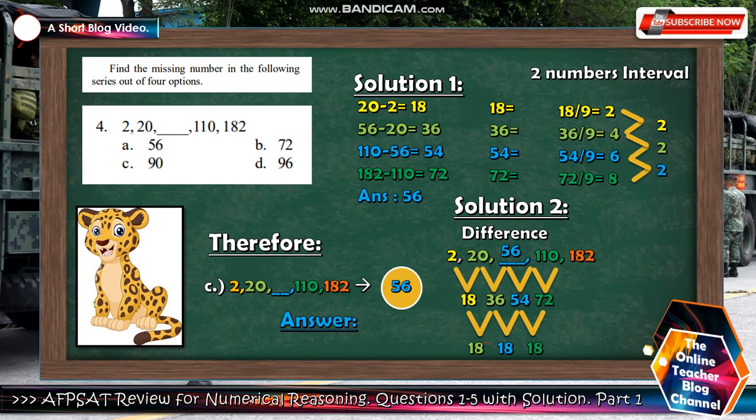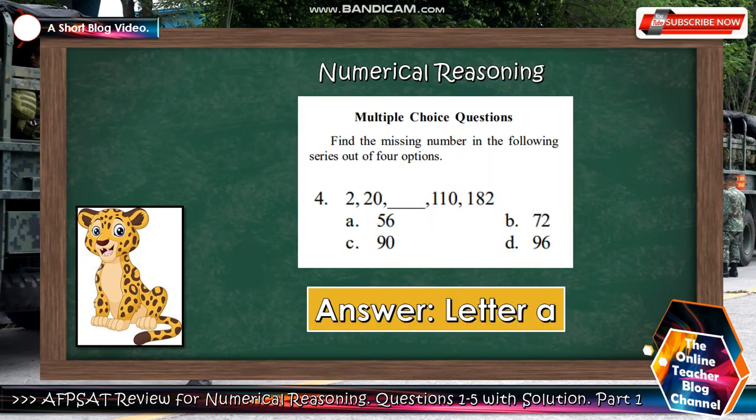Another two solutions here. Solution 1, let's have to subtract it. 20 minus 2 is 18, 56 minus 20 is 36, 110 minus 56 is 54, 182 minus 110 is 72 and the answer is 56. So we have two numbers interval here. 18 divide 9 is 2, 36 divide 9 is 4, 54 divide 9 is 6, 72 divide 9 is 8. Solution 2: the differences are still the same, 18, 36, 54, and 72, with 18 difference or interval. So the answer is letter A.